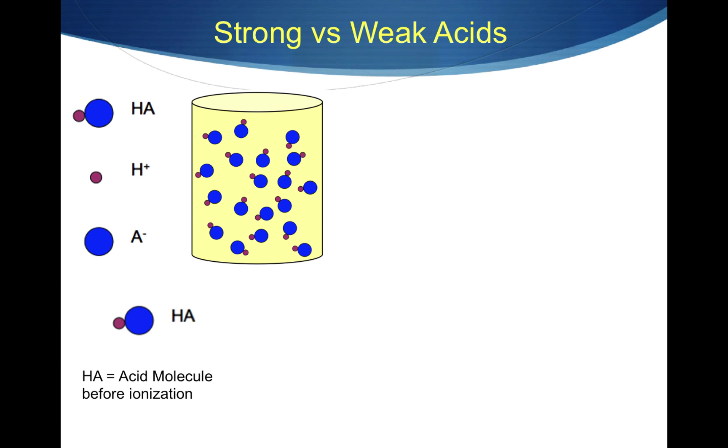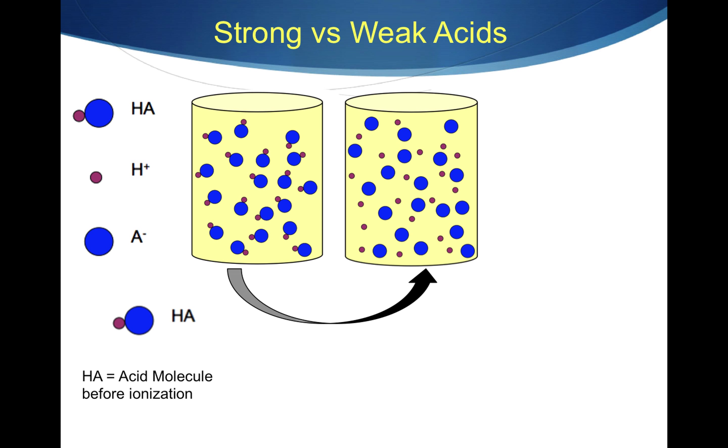Now after water is added, that will determine whether or not it is a strong or a weak acid. In the first container, notice that all of the molecules of HA have ionized into hydrogen ion and A-ion. This is 100% ionized. That means this is a strong acid.